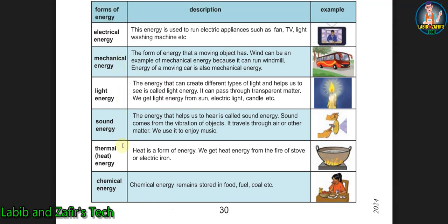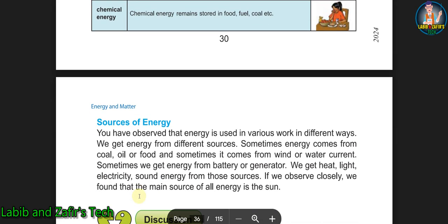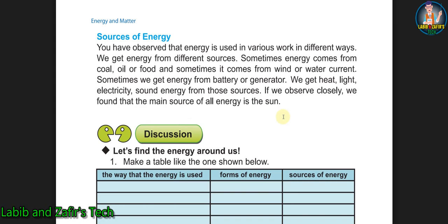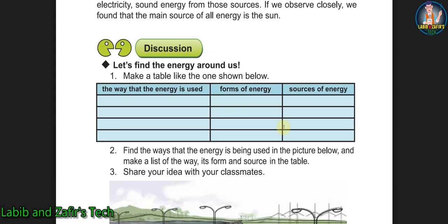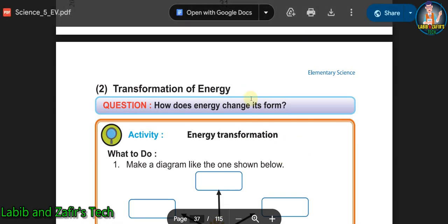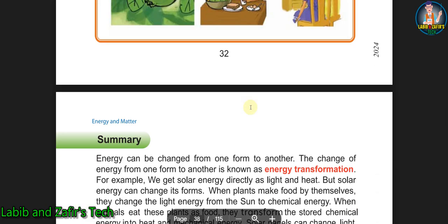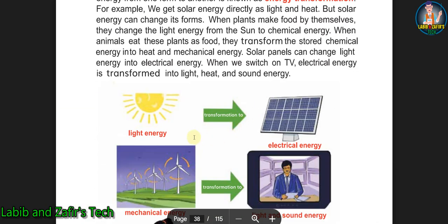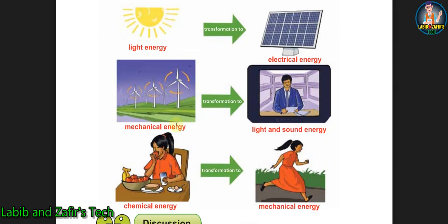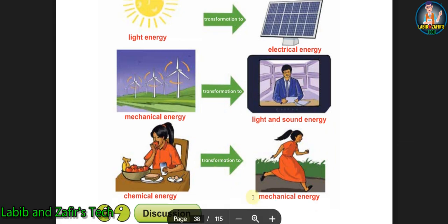Then our second topic will be sources of energy—what is the main source of energy and what are the other sources. In the second lesson we will be able to know how energy is transformed from one form to another form. And after that, here you can see how light energy transforms to electrical energy, mechanical energy to light and sound energy, chemical energy to mechanical energy.